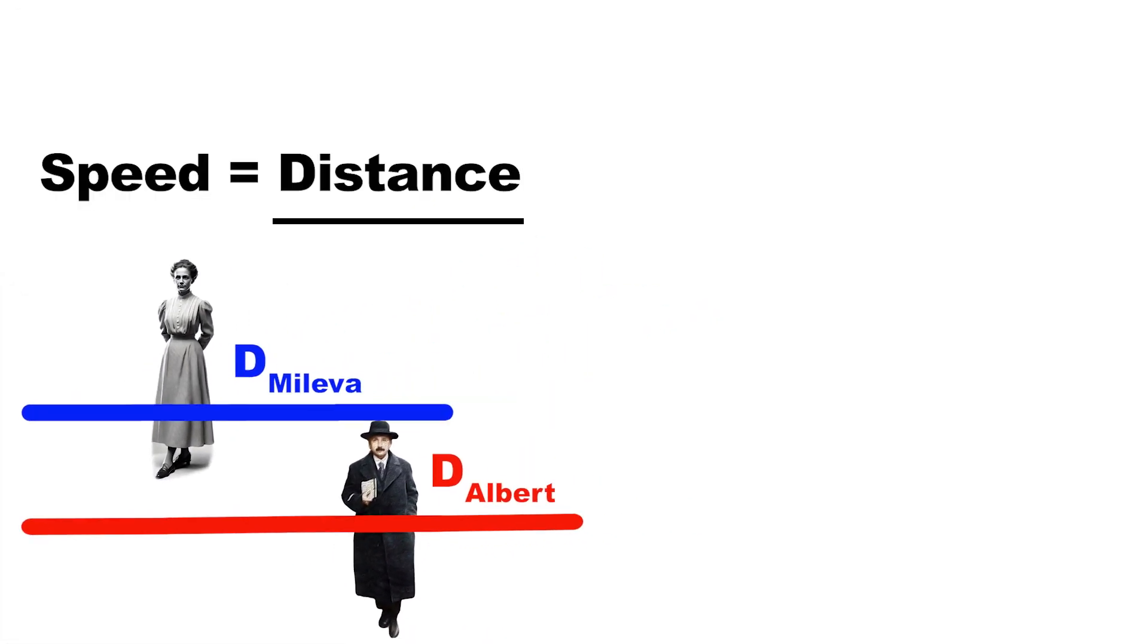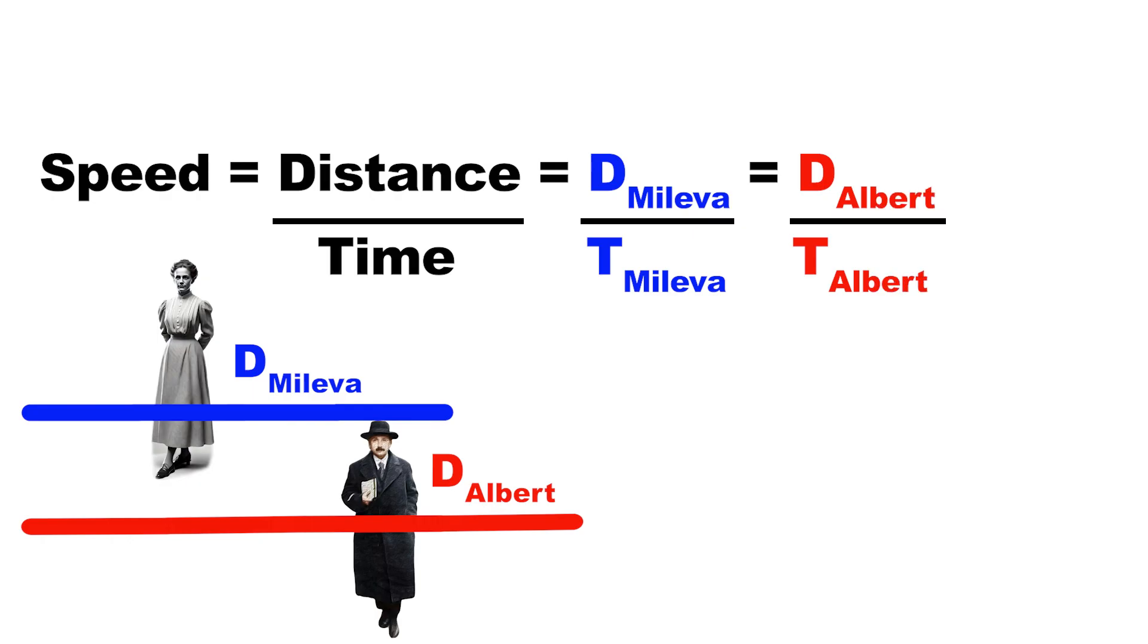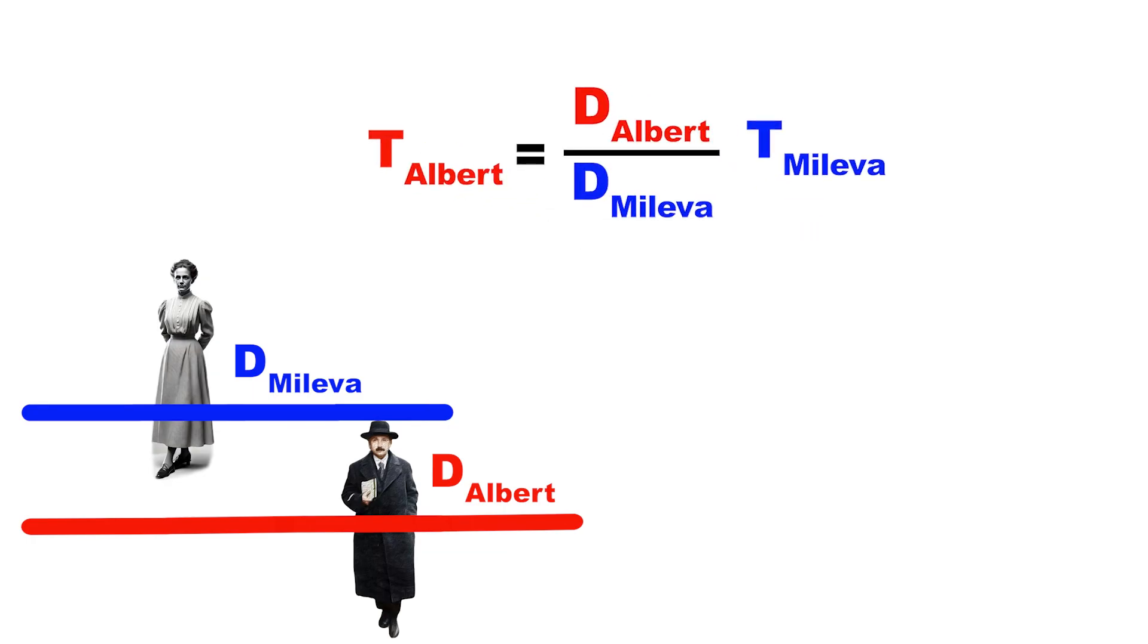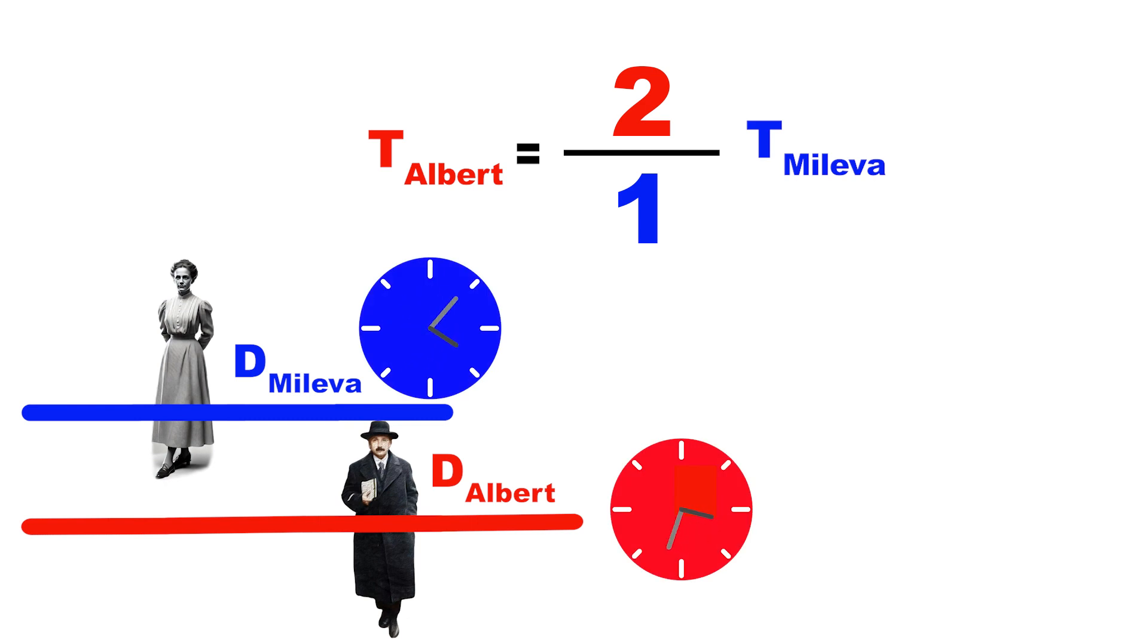Speed is distance divided by time, and since the speed of light is constant everywhere, the distance divided by time for the red dot will be equal to the same ratio for the blue dot. Now, let's rearrange the equation, and for simplicity, let's say the red distance is twice the blue one. The red clock then must take twice as long as the blue clock. Both are seeing the same event, but time is different for each of them because one of them is moving. Time has slowed down.